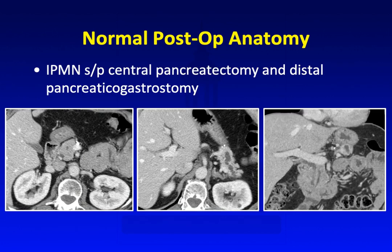Here's an example of a normal central pancreatectomy in which you can see the normal-looking pancreatic head. The pancreatic tail is now hooked up onto the stomach with a pancreaticogastrostomy, and you still have some dilatation of the pancreatic duct within the tail.